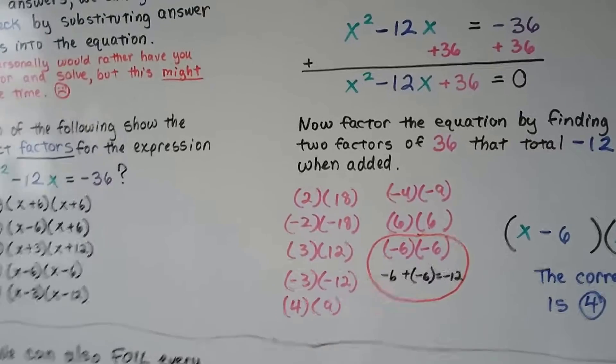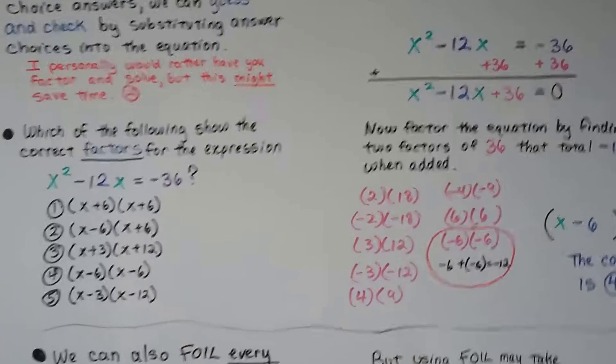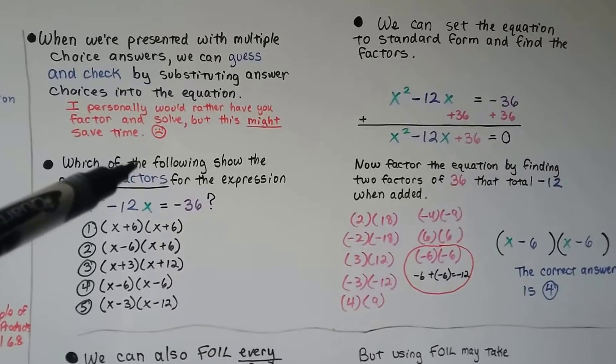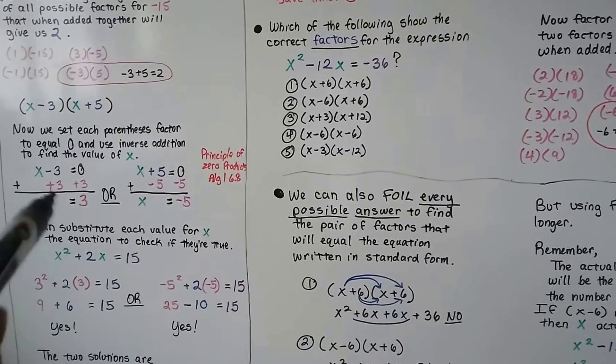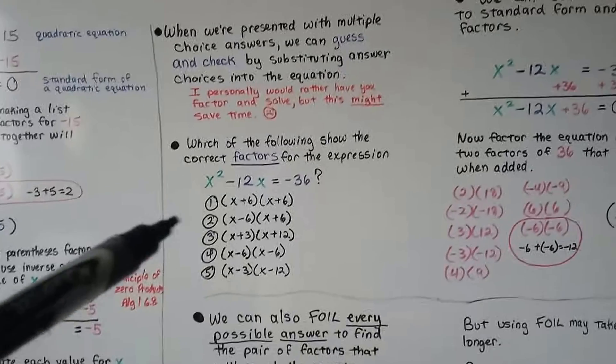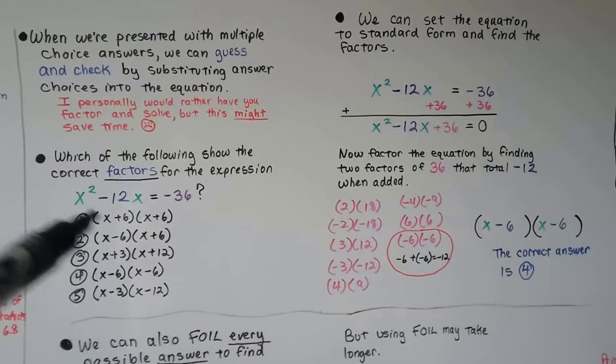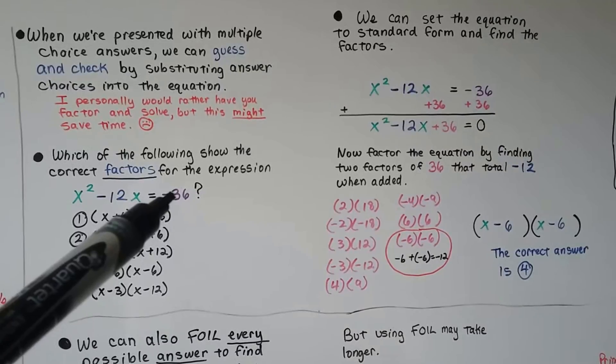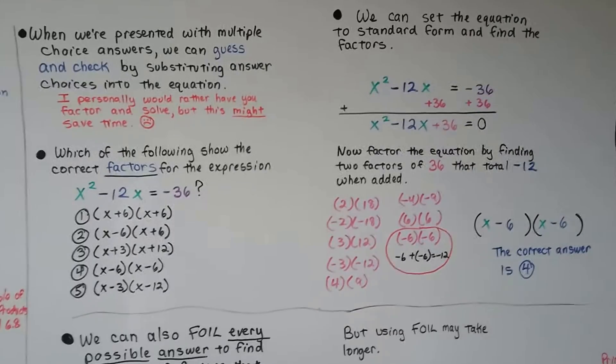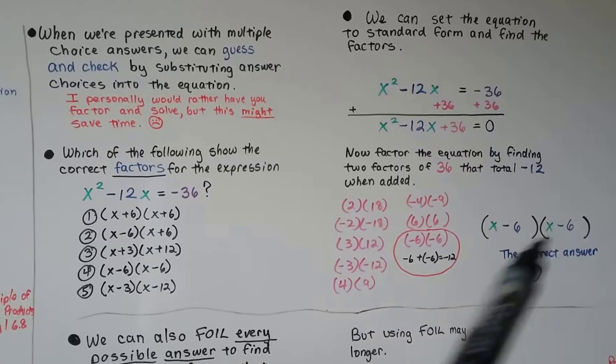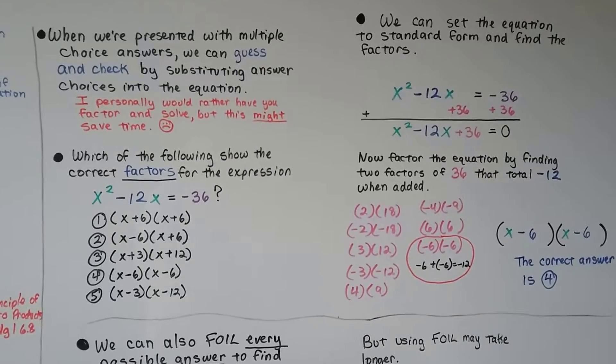So, you can do this actually pretty quickly because you're just looking for the factors. You're not trying to solve for x like we did here when we set it to equal 0 and did all that. We're just looking for the factors. We're just looking for this part. So, what two numbers equal negative 36 that when added together make a negative 12? Whichever they are, that would be the ones.